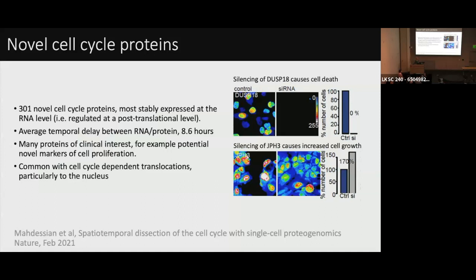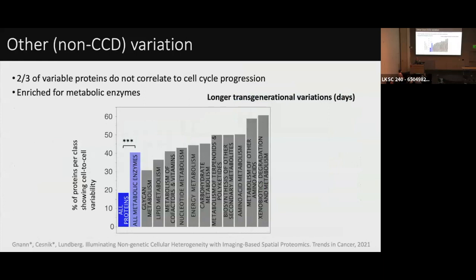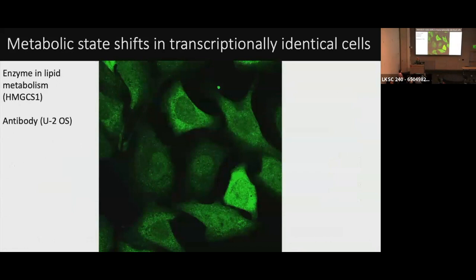What was most interesting: our assumption that most of the variable proteins would be explained by the cell cycle was wrong — only one-third could be explained by the cell cycle. Two-thirds vary depending on something else — signaling, circadian rhythm, we don't know. We noticed a great enrichment for metabolic enzymes: 21% of all human proteins show spatiotemporal dynamics, but for human enzymes only that number is 40%, across many different types of metabolism. As an example, HMGcs1 is an enzyme involved in cholesterol biosynthesis performing its function in the cytosol, but also found in the nucleus, going up and down in levels.